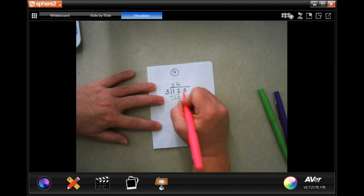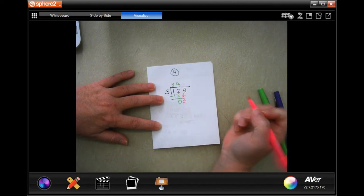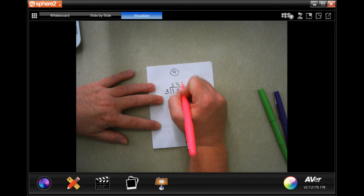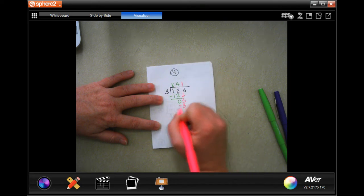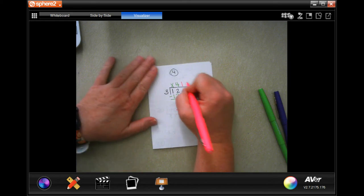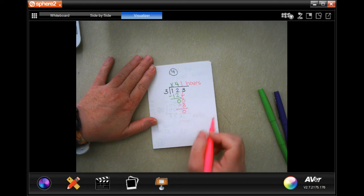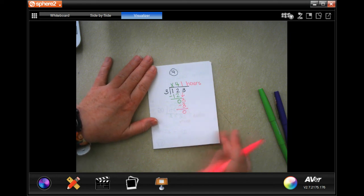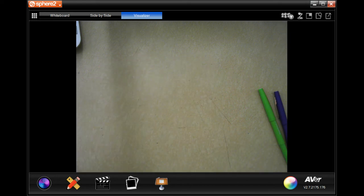4 times 3 is 12, subtract zero. Zero is definitely smaller than 3, so I can bring down my 3 here. 3 goes into 3 one time. 1 times 3 is 3, subtract zero. So 41 hours. That's how many hours it will take her.